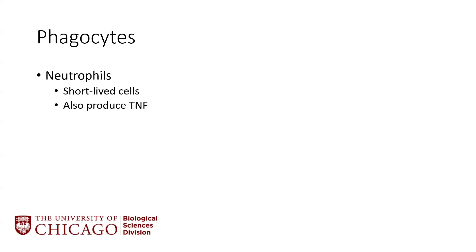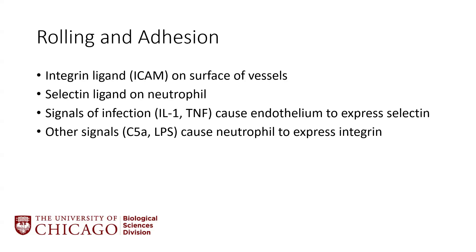Another very important phagocyte is the neutrophil — because macrophages are eventually going to get used up and overwhelmed with infection. Neutrophils are short-lived, they can produce TNF to continue the inflammatory response. In the simplest form: neutrophils dive in, they eat, they die, they become pus.